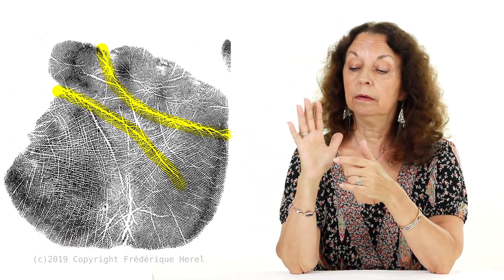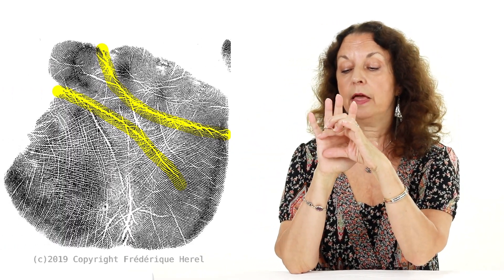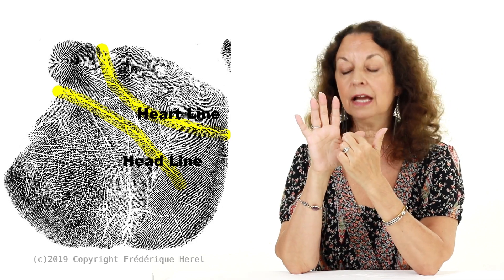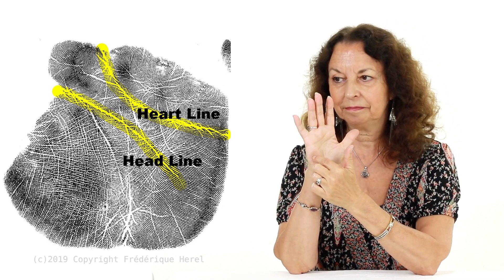Now, where is the quadrangle? The quadrangle is the part of the hand that is formed by the heart line and the head line.